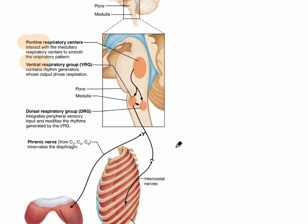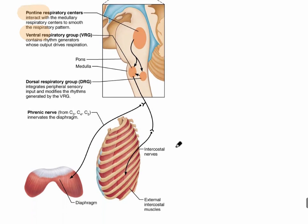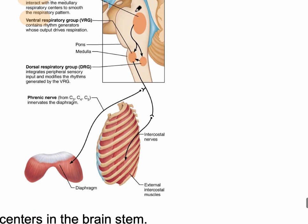What happens is these centers send a nerve signal — a nerve impulse — to the diaphragm and the external intercostal muscles. Remember, those are the two primary muscles involved with inspiration.